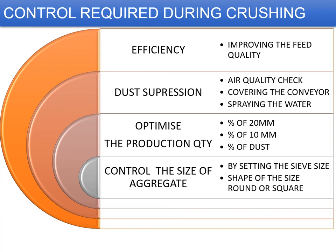Controls required during crushing include improving feeding quality and controlling dust separation due to environmental concerns — checking air quality, covering conveyors throughout the process, and having a spraying arrangement at the primary crusher and on the conveyors carrying aggregates. To optimize production quantity, you need to fine-tune the sieves and fine-tune the gaps between the primary crusher jaw plates.